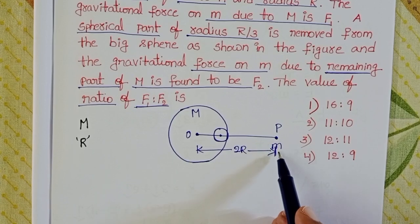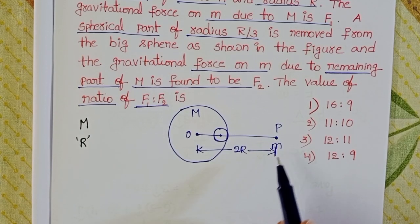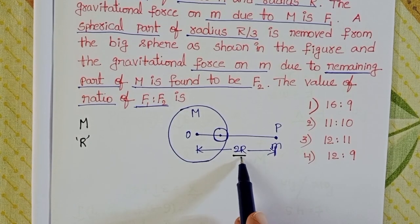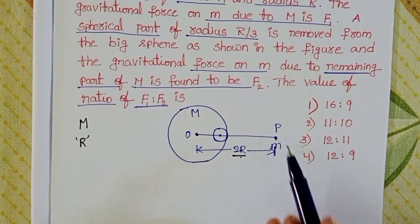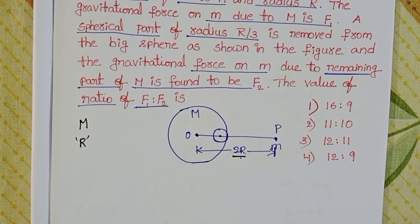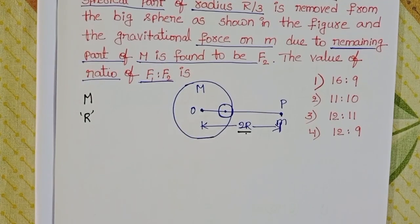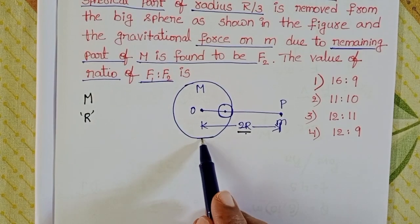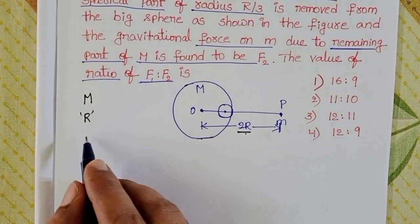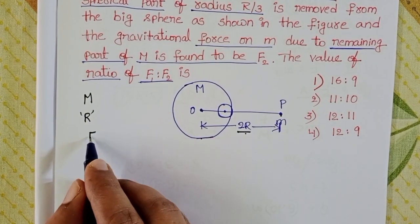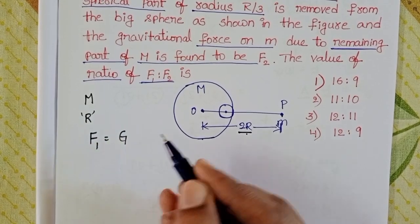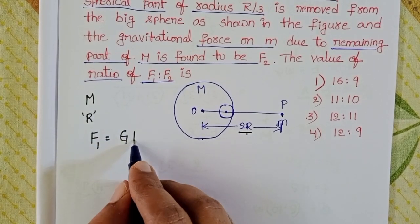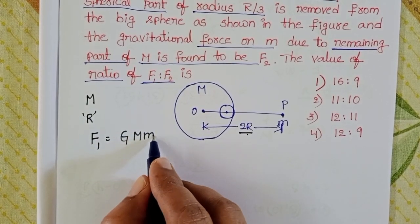The point mass m is placed at a distance 2R from the center of the solid sphere. The gravitational force of attraction between the solid sphere and point mass is F1. We know the formula: gravitational force of attraction equals G × M1 × M2 / R².